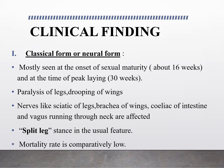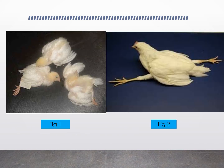The first clinical finding is the classical form or neural form. It is mostly seen at the age of sexual maturity, around 16 weeks, and at the time of peak laying, around 30 weeks of age. There is paralysis of legs and drooping of wings. Nerves affected include the sciatic of the leg, brachial of the wings, celiac of the intestine, and vagus running through the neck. Split leg stance is the most characteristic feature. Mortality rate in this form is comparatively low. The bird is seen in a split leg position, stretching its legs in opposite directions.